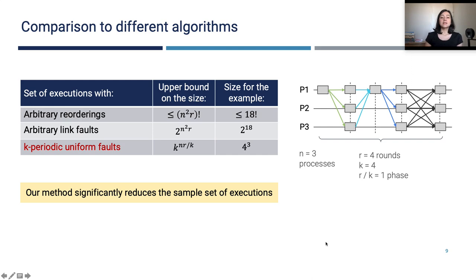Here's a comparison to different algorithms based on their sizes of sample sets. Trivially, the smaller the sample set, the higher probability of sampling a buggy execution. Here we give the upper bounds on the sizes of the sample sets, and here we give the concrete sizes for the example here. We have N processes, N equals 3 here. We have R equals 4 rounds in the execution and K, the period of recovery, is 4 and we have a single phase. So if you want to sample from arbitrary reorderings, asynchronous executions, the size of the sample set is the reorderings of all messages. At most, we have N square R messages. That is, in a round, in the upper bound, all processes can send a message to another one, so N square messages. In R rounds, that is N square R.